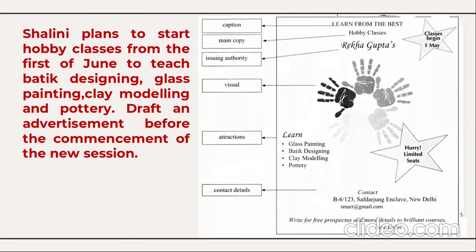Shalini plans to start hobby classes from 1st June to teach boutique designing, glass painting, clay modeling, and pottery. Draft an advertisement: heading 'Learn from the Best — Hobby Classes' by Shalini Gupta. Mention who is issuing it (the owner), classes beginning from 1st May, visuals, and attractions such as learn glass painting, boutique designing, clay modeling. Add a remark like 'Hurry — limited seats!' and the contact details. This is how you draft both commercial and classified advertisements.